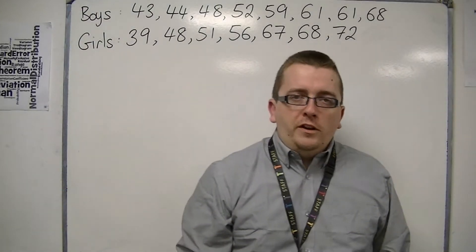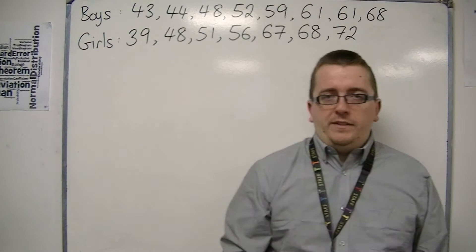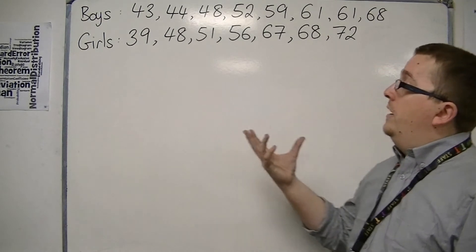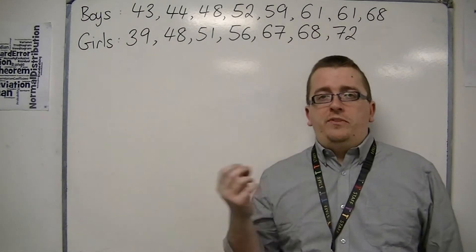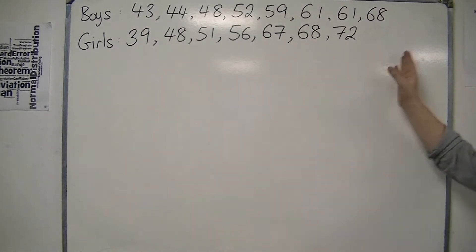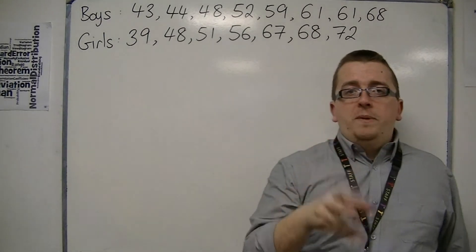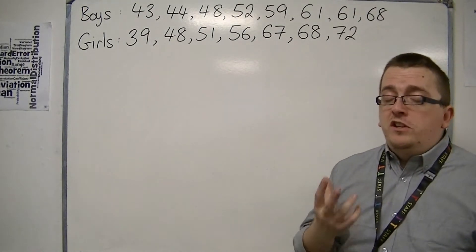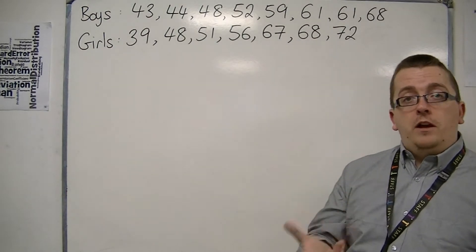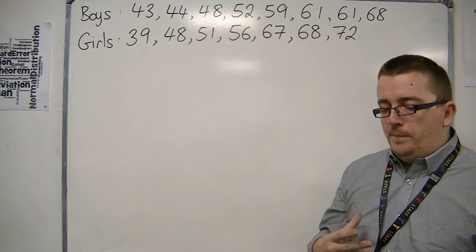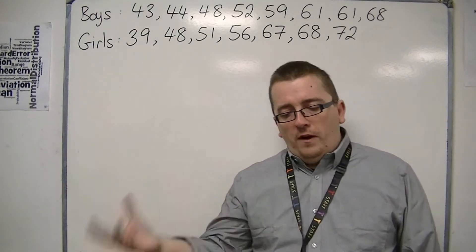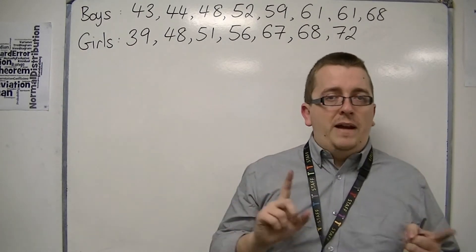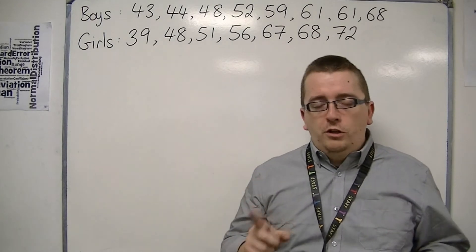In this video we're going to be looking at two sets of data. Let's say that there is a class where we've got a number of boys and a number of girls, and they all take the same test. And these are the scores that they achieved. Now, what I've been asked to do is make a back-to-back stem and leaf diagram so that we can compare the distribution of the class scores between the boys and the girls. And then I'm going to want to try and find the median and the range for both sets, and then make a comparison between the two. What conclusions can I come to?